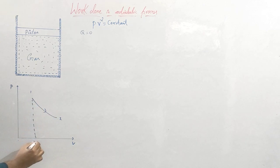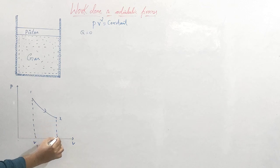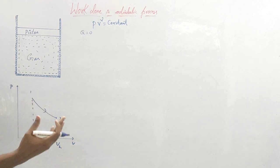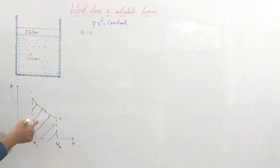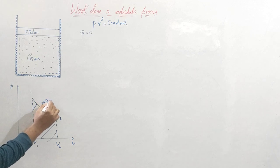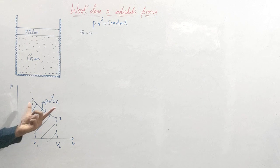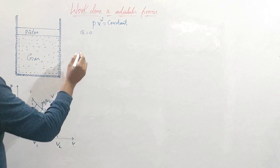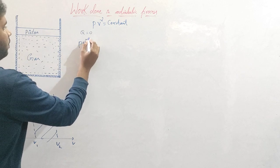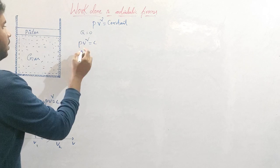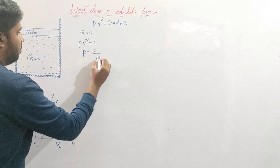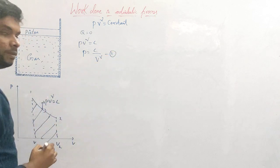This will be volume V1 and this will be volume V2. Work done is nothing but the area under this PV curve. This curve follows the law pV^γ = constant because it is an adiabatic process. From here, pV^γ = constant C, so I can write p = C / V^γ. This is equation number one.